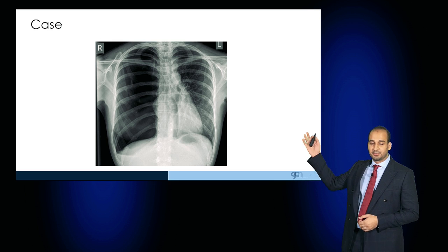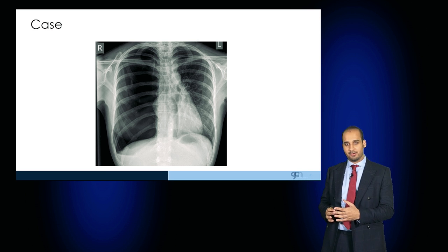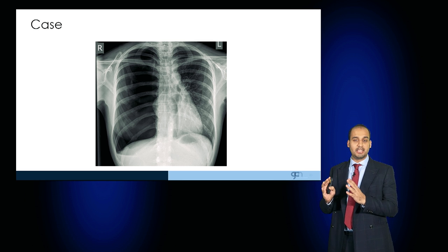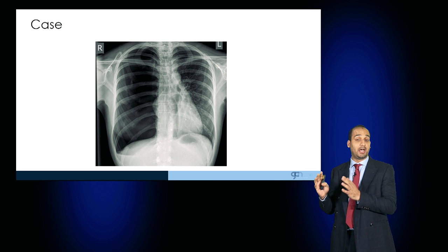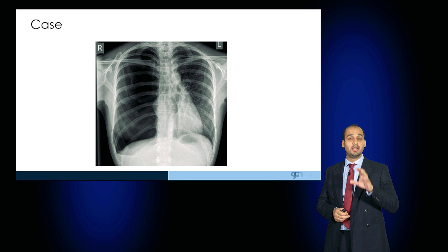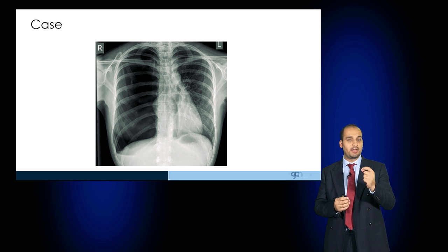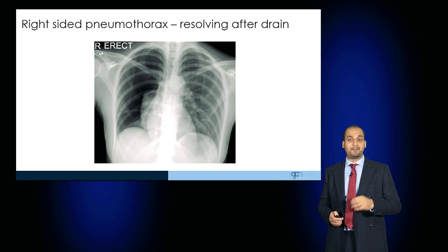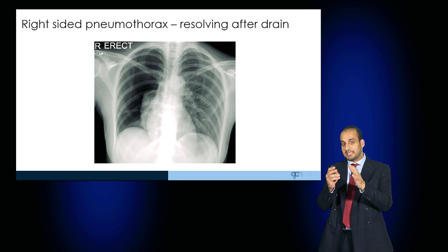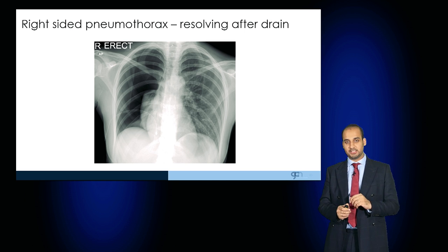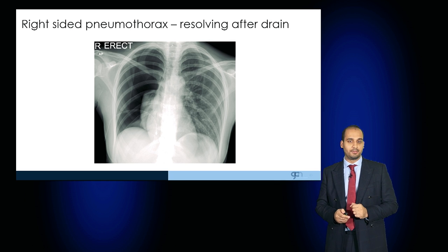This next case demonstrates a large right-sided tension pneumothorax. You can see the displacement of the mediastinum towards the left-hand side — the trachea has shifted, the mediastinum has shifted, and the heart has shifted. A tension pneumothorax is a clinical diagnosis that should have needle decompression as a life-saving measure even before a chest radiograph is taken, so technically a radiograph like this should not really be visible. You can see that a chest drain has been inserted, the tension has now been released, the mediastinum has shifted back into its normal position, and there is very early reinflation of the right lung.